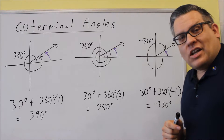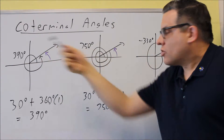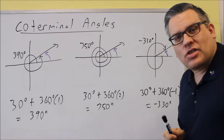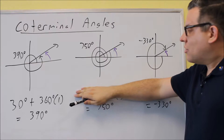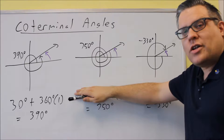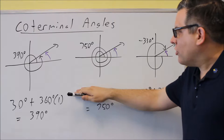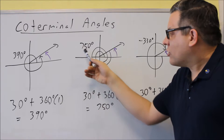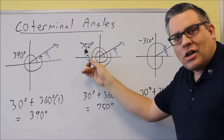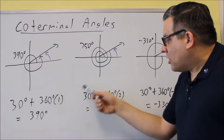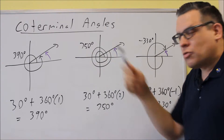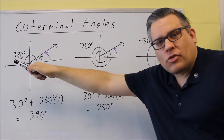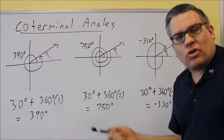The problems we'll look at next will give you an angle and ask you to find an angle between 0 and 360 that's coterminal with it. For instance, if they give you 750 and ask for a coterminal angle between 0 and 360, you take 750 and keep subtracting 360 until you reach an angle in that range. 750 minus 360 is still too big, so subtract 360 again and you get 30 degrees. The same approach works for 390: subtract one revolution to get an angle between 0 and 360.